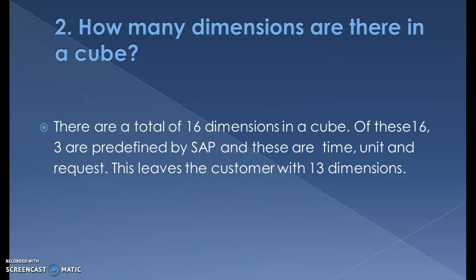How many dimensions are there in a cube? There can be a maximum of 16 dimensions. Three are predefined by SAP — these are Time, Unit, and Request — leaving the customer with 13 dimensions. Of those 13, at least one must be used, so there is a minimum of four dimensions total. The maximum is 16: three standard dimensions plus 13 user-defined dimensions.